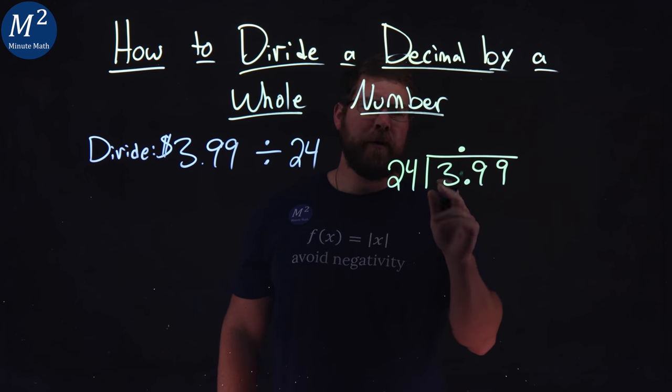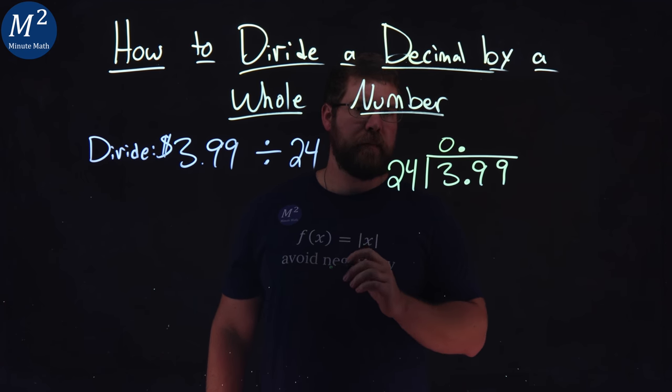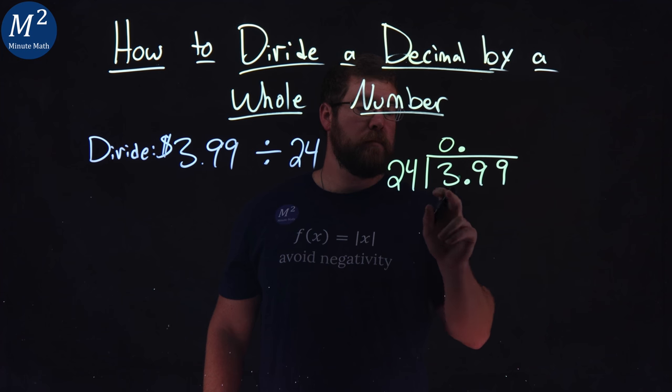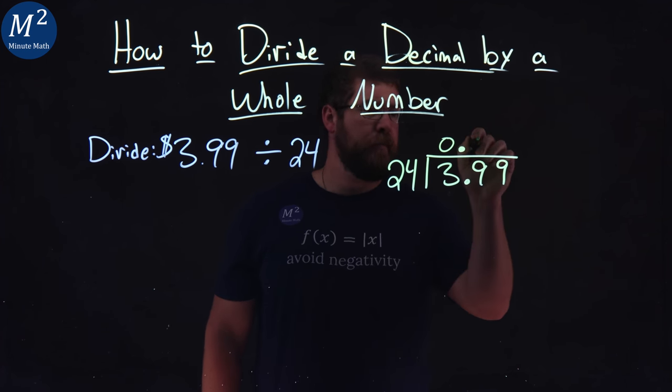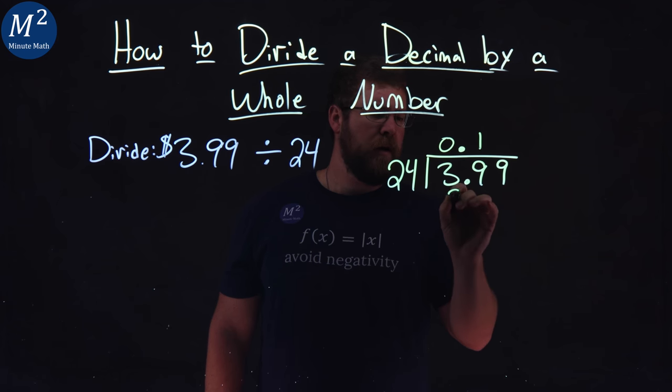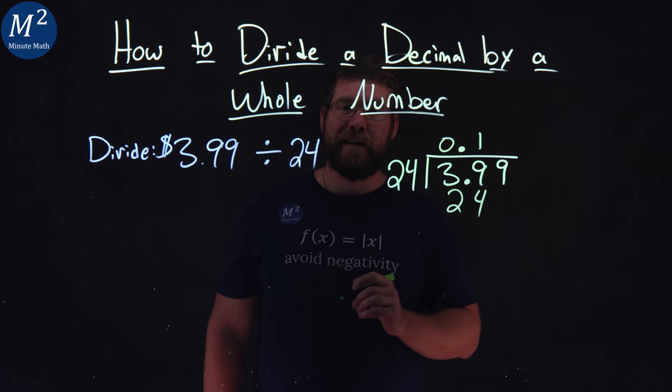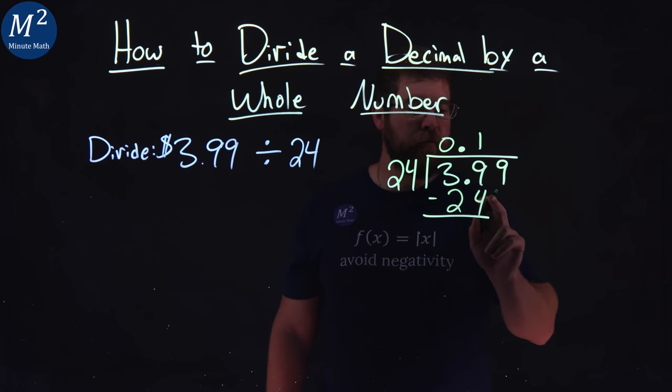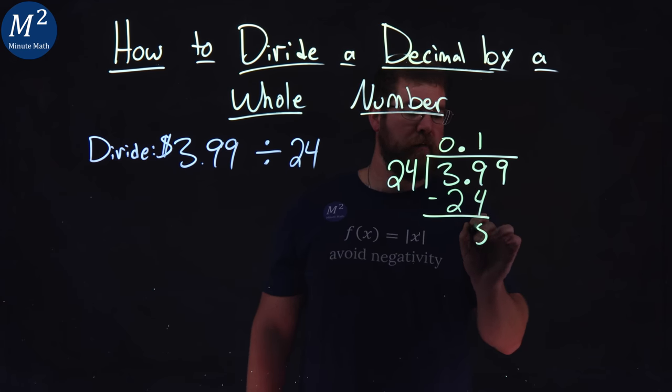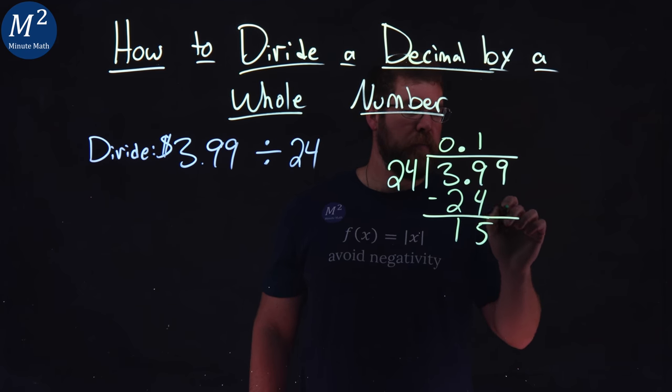Can 24 go into 3? No. Can 24 go into 39? And the answer is yes, one time. 1 times 24 is 24 right there. Subtract the two numbers here. 9 minus 4 is 5, and 3 minus 2 is 1. We want to bring down that 9.